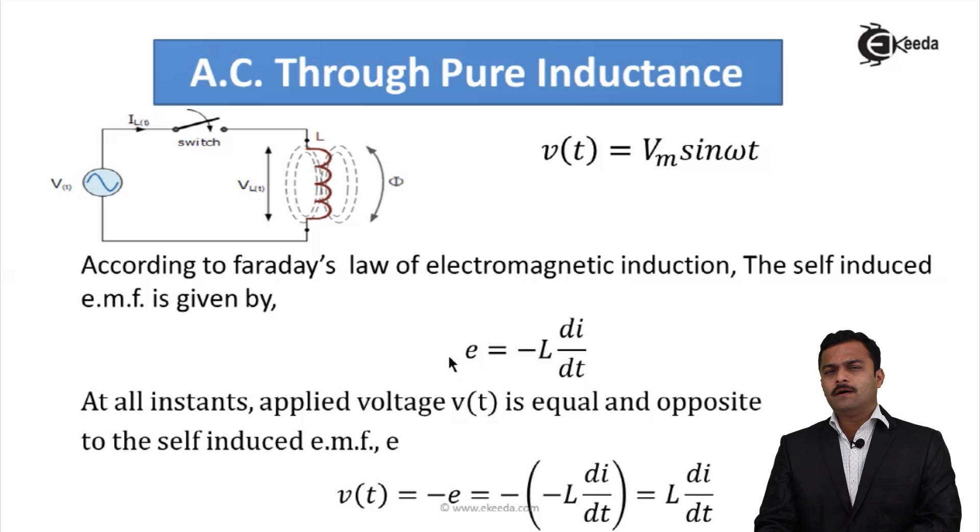As per Lenz's law, effect will oppose the cause. Effect is self induced EMF e and cause is voltage v. So I can say voltage applied is minus e, so that is minus bracket minus L di/dt, equal to L di/dt.